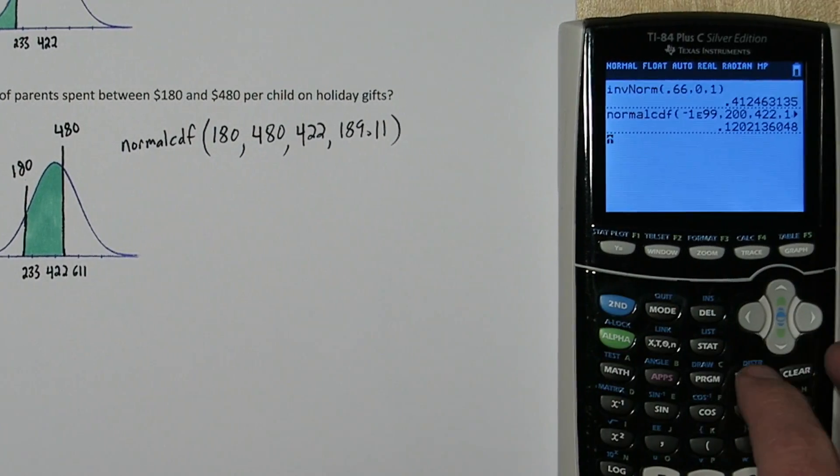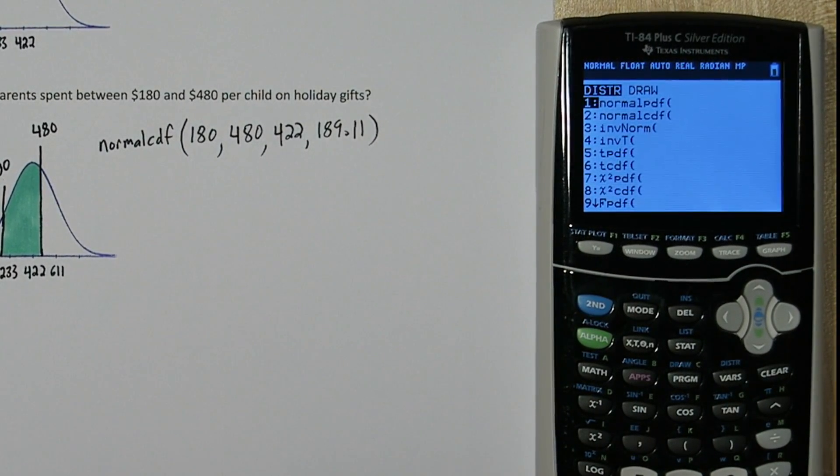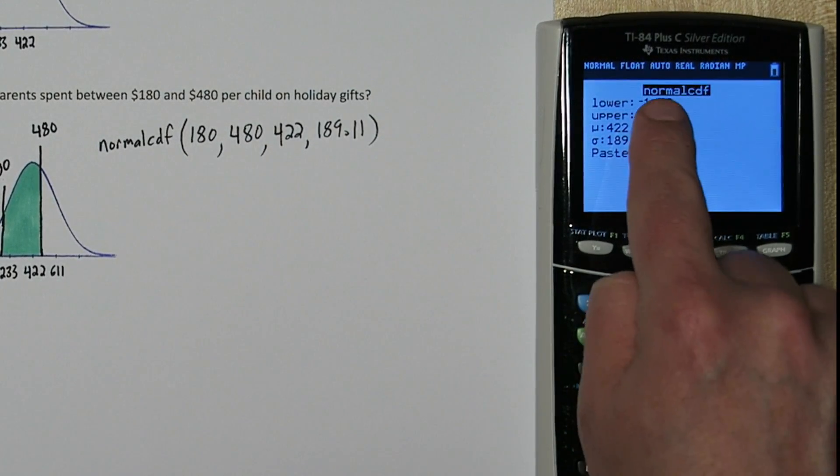So to do this on the calculator, press 2nd Vars. And you get to your distribution menu. Go to norm CDF. And for lower limit, we're going to type our 180.